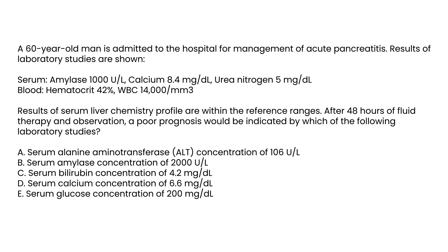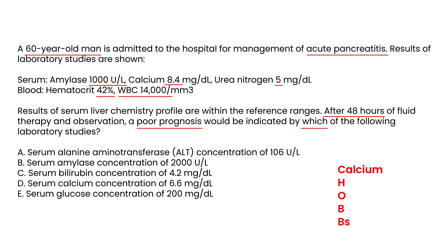Clinical vignette one: A 60-year-old man is admitted for acute pancreatitis. Labs show amylase 1000, calcium 8.4, BUN 5, hematocrit 42, WBC 14. Liver chemistry is within reference ranges. After 48 hours, a poor prognosis would be indicated by which lab finding? Using the Calvin and Hobbes mnemonic, the C stands for calcium less than 8 — that is the correct answer, choice D. The other choices are not part of Ranson's 48-hour criteria.